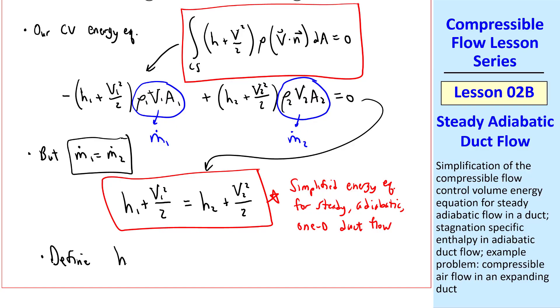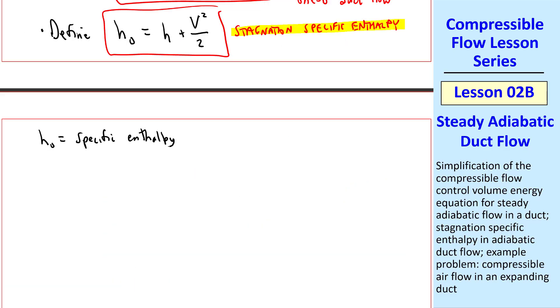Let's also define h0 as h plus v squared over 2. We'll call this the stagnation-specific enthalpy, with the 0 or not subscript indicating stagnation conditions. In words, h0 is the specific enthalpy of a fluid when it is brought to rest adiabatically.